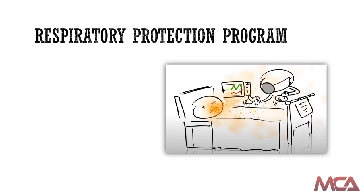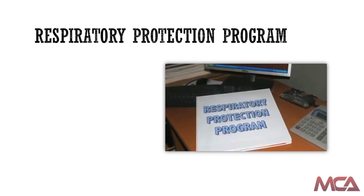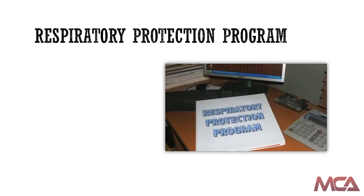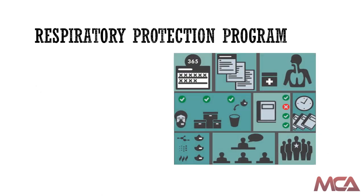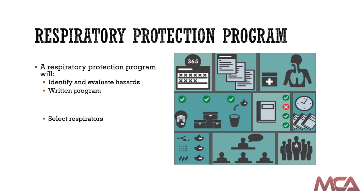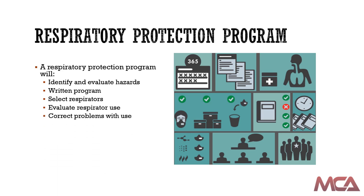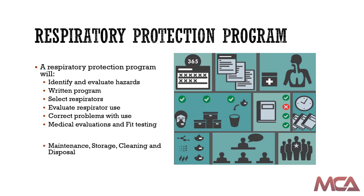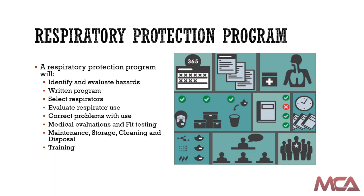When a respirator is required to be used, your employer must develop and implement a comprehensive respiratory protection program designed to meet the requirements of federal or state OSHA's respiratory protection standard. A comprehensive respiratory protection program will identify and evaluate hazards, develop a written operations program, properly select respirators, evaluate and correct any problems with respirator use, conduct medical evaluations, medical clearance, and fit testing, provide for maintenance, storage, and cleaning of respirators, provide training, and provide access to specific records and documents such as a written copy of the respiratory protection program.